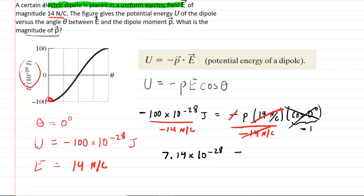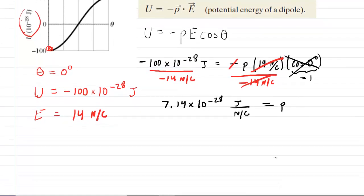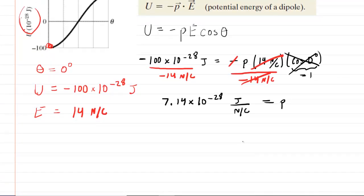And then the unit at this point would be joules divided by newtons per coulomb. This is the correct answer for the magnitude of the dipole moment, but we probably want to clean up that unit a little bit.